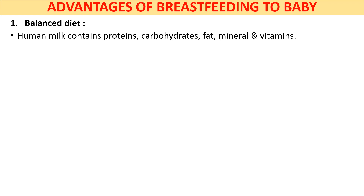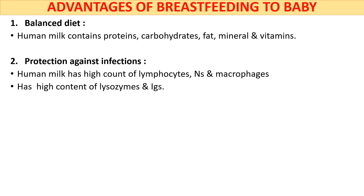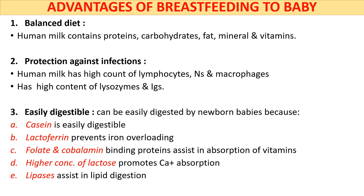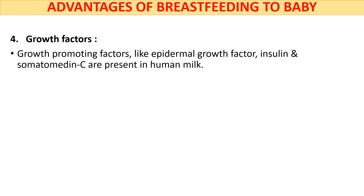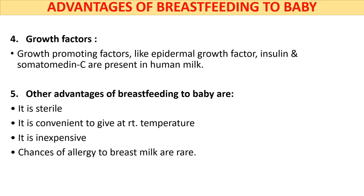Now let us see the advantages of breastfeeding. Since milk is a balanced diet for babies, it helps in their healthy growth and development. Human milk has high levels of white blood cells and immunoglobulins that provide natural immunity against many infections. Human milk is easy to digest for babies as it contains casein. The presence of folate and cobalamin binding proteins helps in easy absorption of vitamins from the milk. Higher concentration of lactose promotes calcium absorption, and lipases help in digestion of fats. Many growth promoting factors like epidermal growth factor, insulin, and somatomedins are present in milk. Also, mother's milk is sterile, convenient to give at the right temperature, inexpensive, and hypoallergenic to the infant.